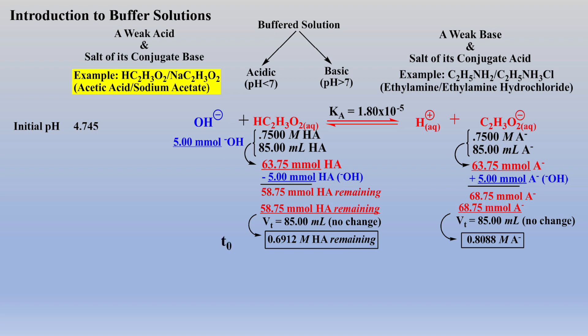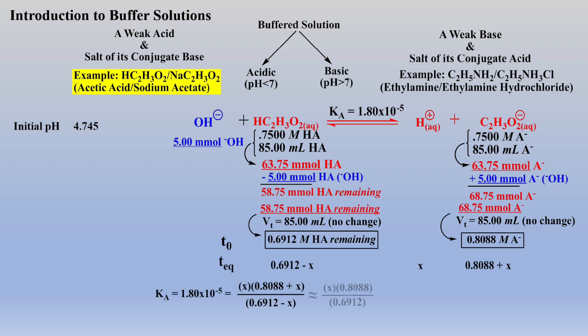The new initial molarities are subjected to our usual problem-solving strategy to afford pH of a solution. We write down the change, set up the equilibrium expression, simplify the math via the 5% rule, and solve for x, the proton concentration, and finally calculate the resulting pH of the solution.